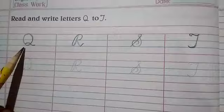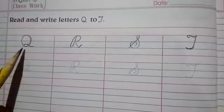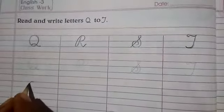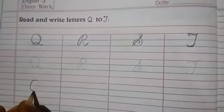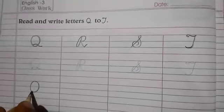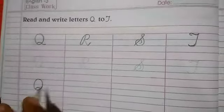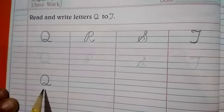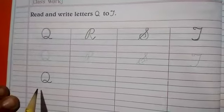First letter is Q. So how will you write letter Q? Make a circle using top red line and the third line. On the third line make a small curve line. Again outside one more curve line. This is letter Q.